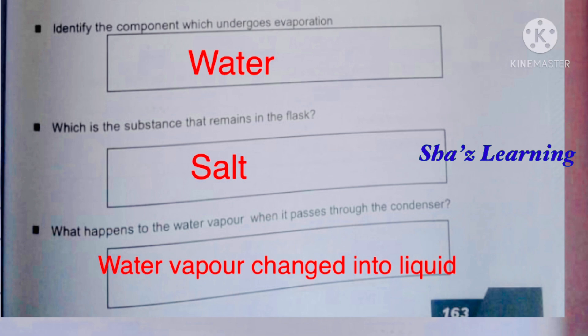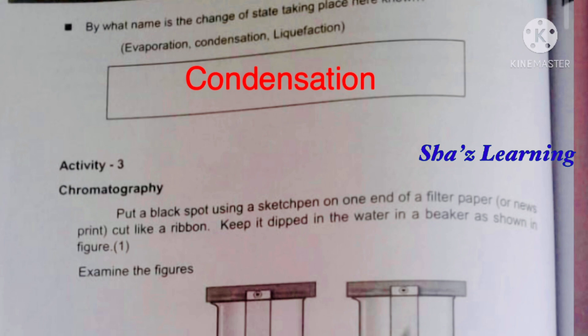Salt remains in the salt solution in the flask. What happens to the water vapor when it passes through the condenser? The water vapor is changed into liquid. By what name are the changes of state in distillation called? Evaporation, condensation, and liquefaction — condensation is the term.